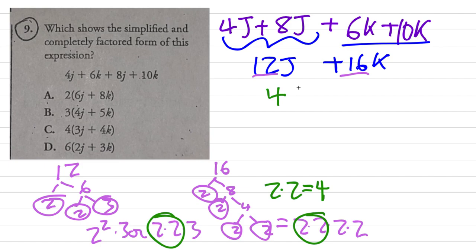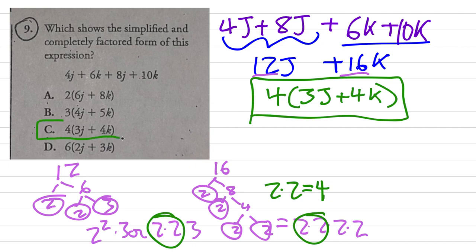So we're going to factor out a 4 out of the 12j. Well, 4 times what is 12? 4 times 3 is 12, that's going to be 3j plus... 16 divided by 4 is 4. So it's going to be 4 times the quantity 3j plus 4k. I believe that's option C: 4 open parentheses 3j plus 4k close parentheses. Good luck.